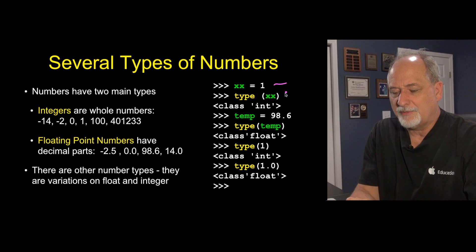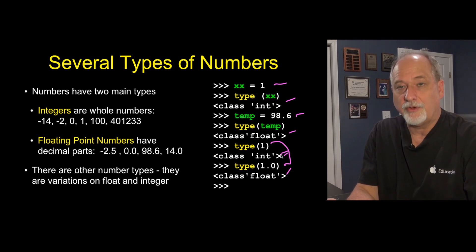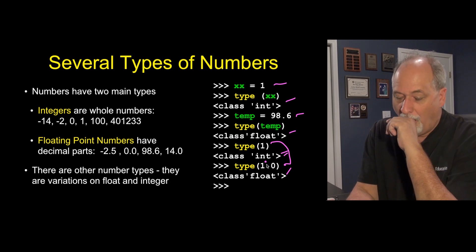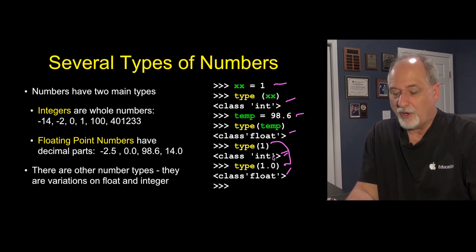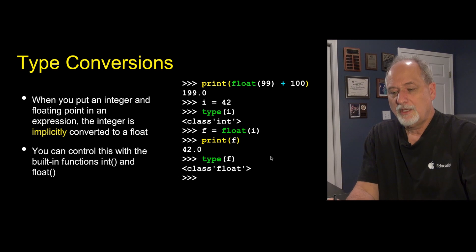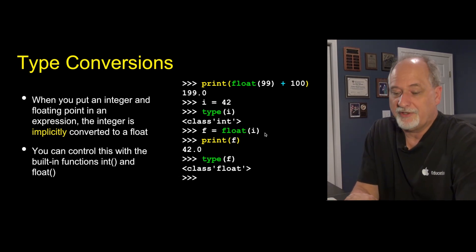One with no decimal, that's an integer number. 98.6 with a decimal, that's a floating point number. So constants can be both integer and floating point. And I'm just asking, over and over again, what is the type of what's in xxx? What's the type of what's in temp? What's the type of the constant one? And what's the type of 1.0?